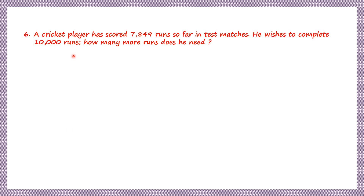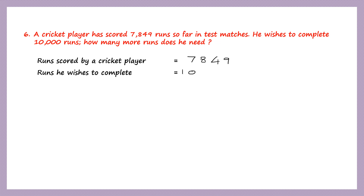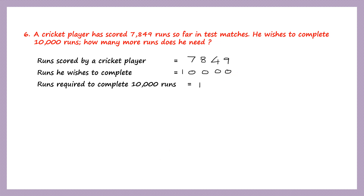Question 6. A cricket player has scored 7,849 runs so far in test matches. He wishes to complete 10,000 runs. How many more runs does he need? Runs scored so far: 7,849. Runs he wishes to complete: 10,000. To find how many more runs he needs, we subtract: 10,000 minus 7,849.